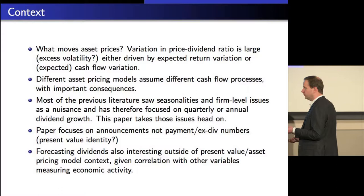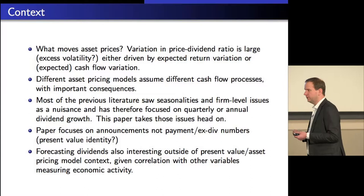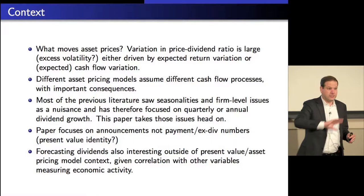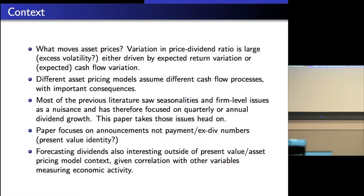I'm particularly not saying discount rates, because the Campbell-Shiller forward iteration of the return equation doesn't actually say anything about whether returns are compensation for risk or not. The only thing it says is that expected returns going forward vary for whatever reason, and/or expected dividend growth seems to vary. So if we want to make progress in understanding what moves asset prices, we need to make progress in understanding these components.